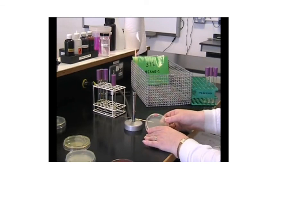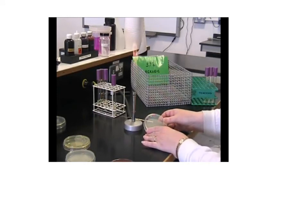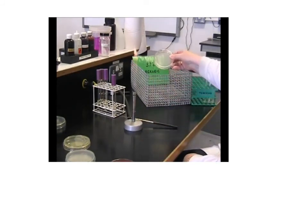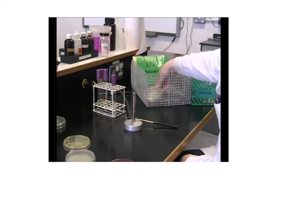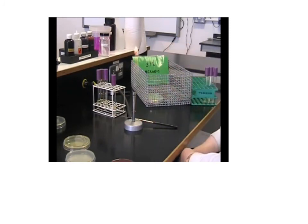When you've finished streaking your plate, label it with your initials, the type of media, and the date. This will enable you to find your plate in the next practical. Then place your plate inverted into the basket with the appropriate label and temperature. You need to incubate your plates at the appropriate temperature. Think also, do I need aerobic conditions with oxygen, or anaerobic in the absence of oxygen?